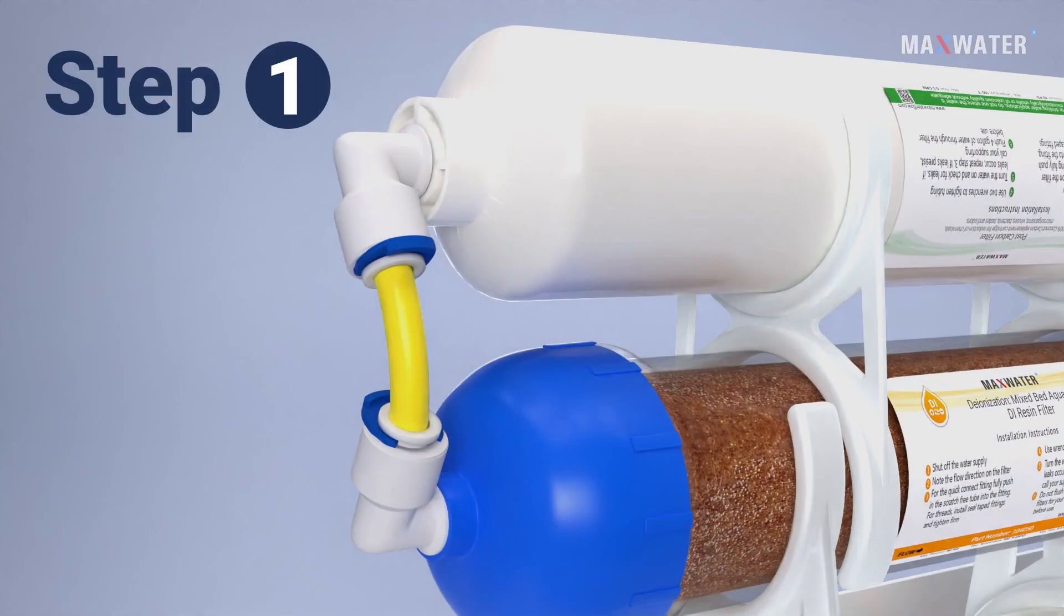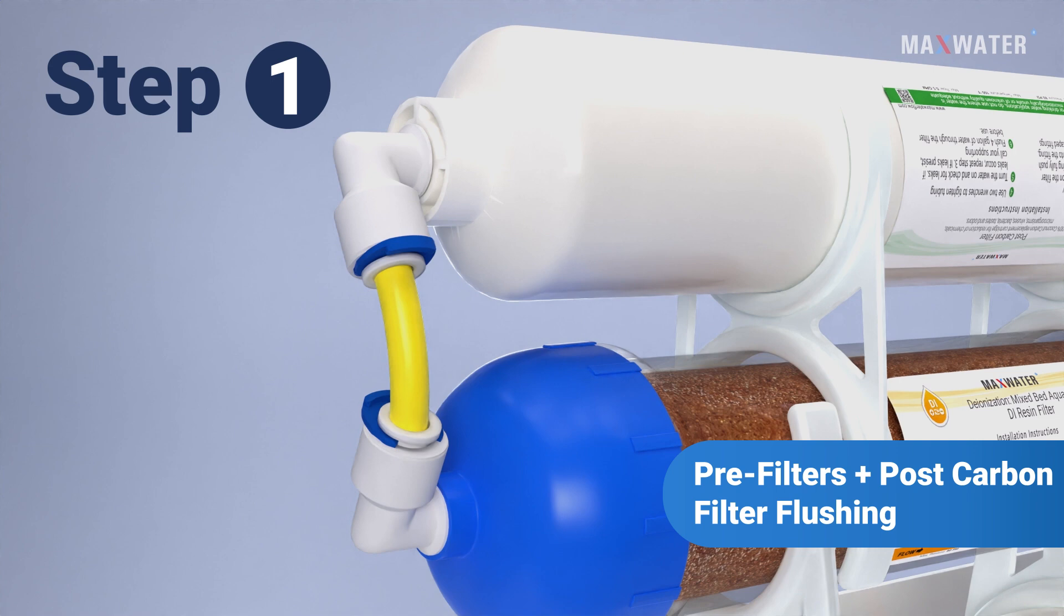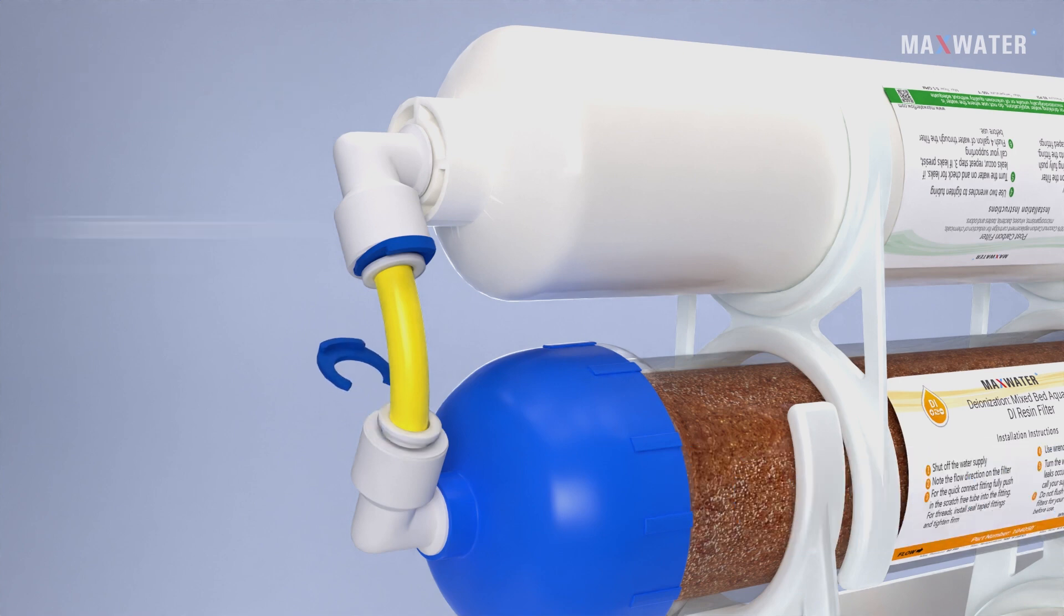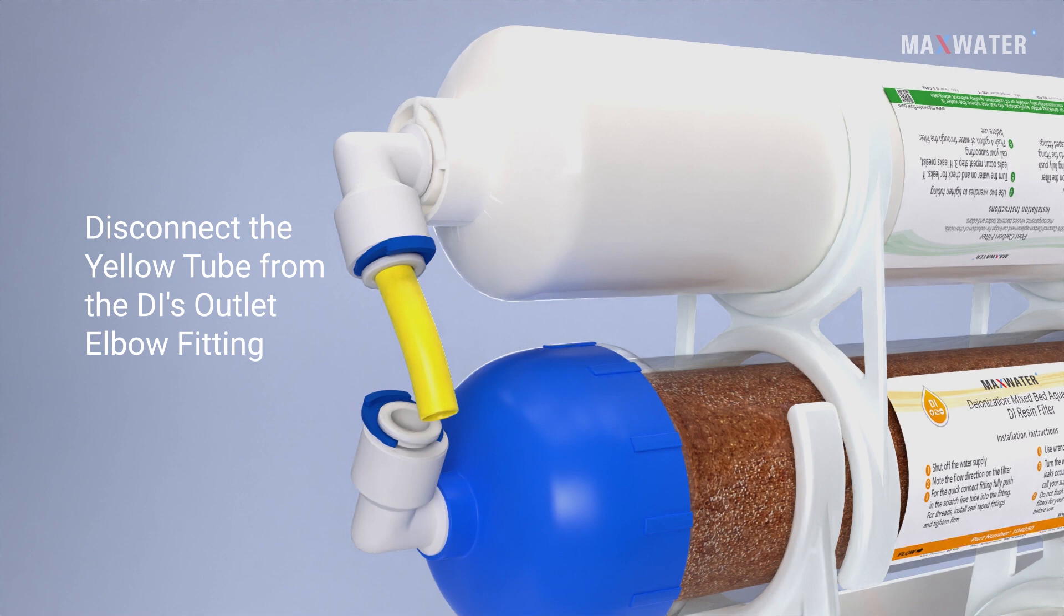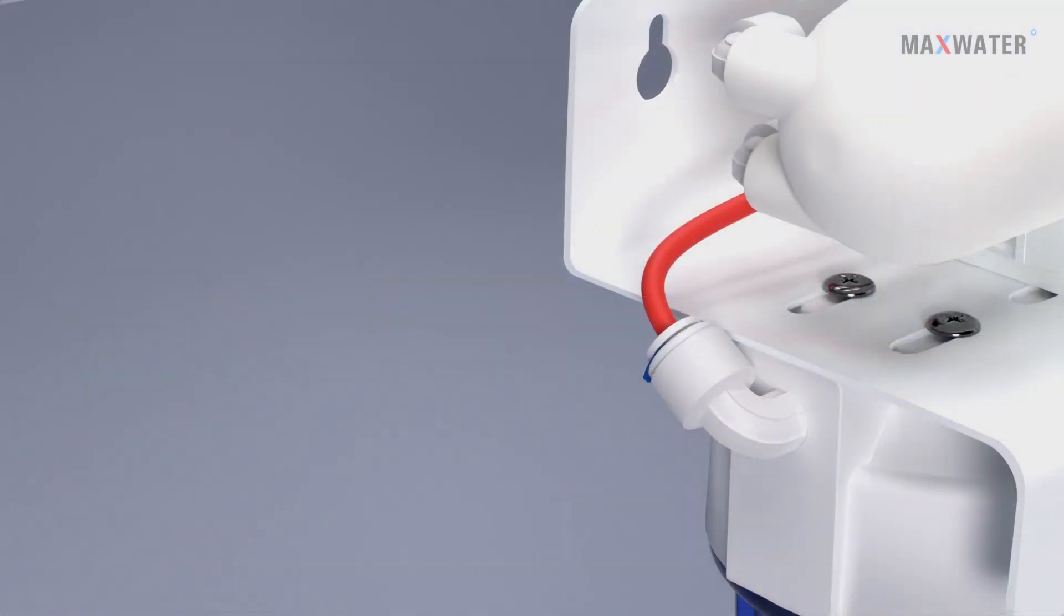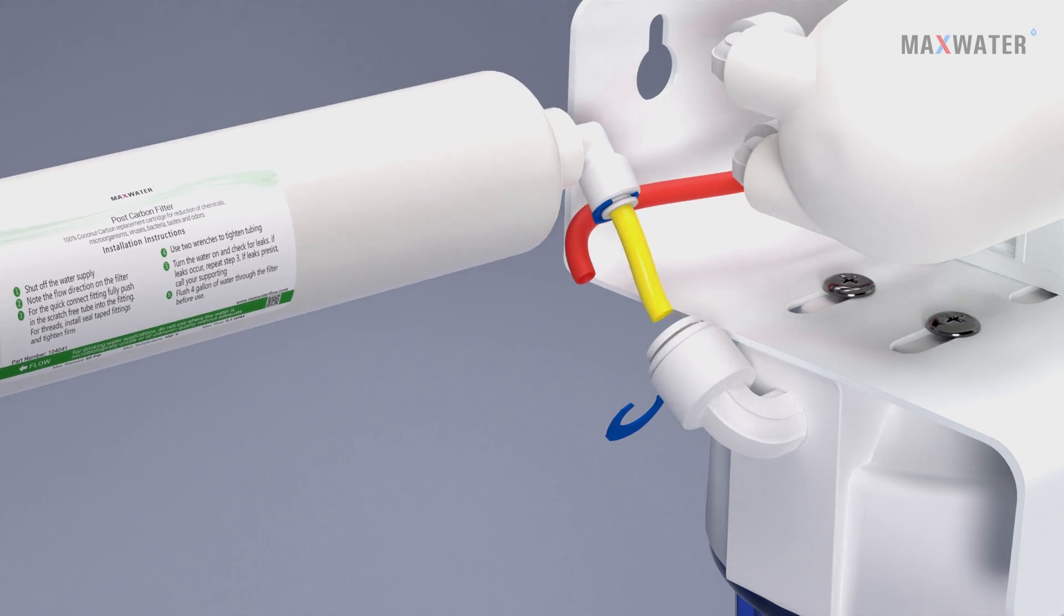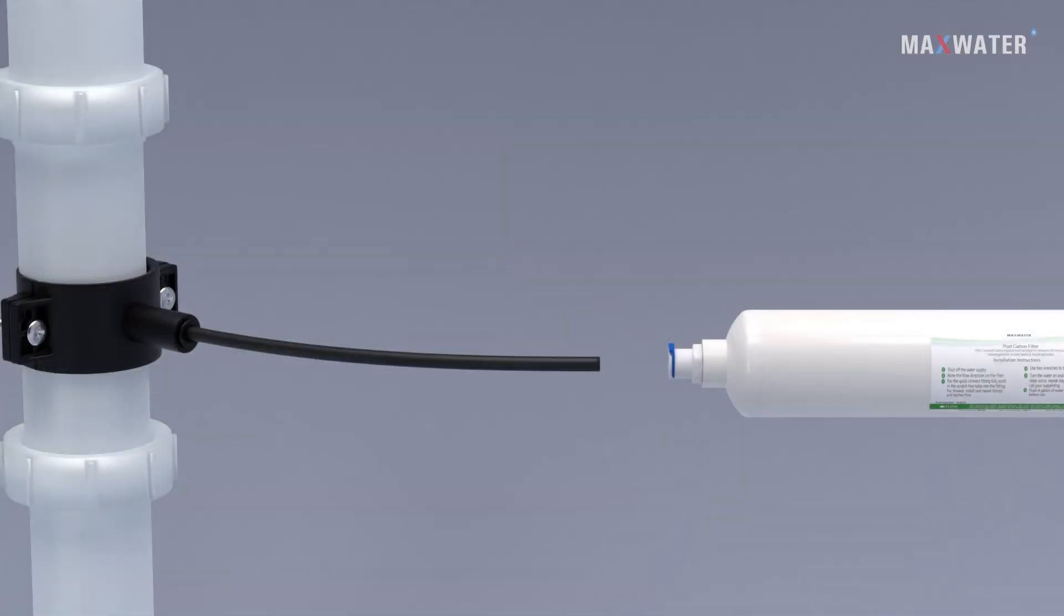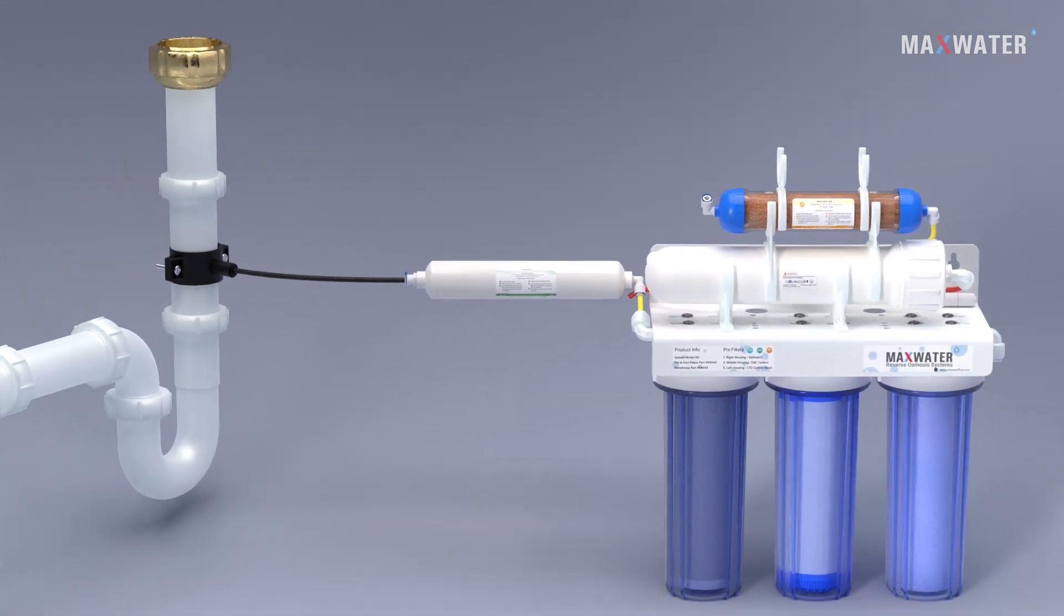Flushing step number one: flushing your pre-filters and post carbon filter. Turn off the water supply, disconnect the yellow tube from the DI's outlet elbow fitting. Connect the yellow tube from the post carbon's inlet fitting to the outlet fitting of the three pre-filters, then connect the black tube coming from the drain saddle to the post carbon fitting's outlet.